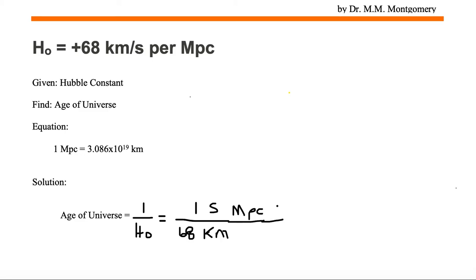Now I want to get rid of megaparsecs. So I'm going to build a railroad track, and we have 1 megaparsec down in the denominator.